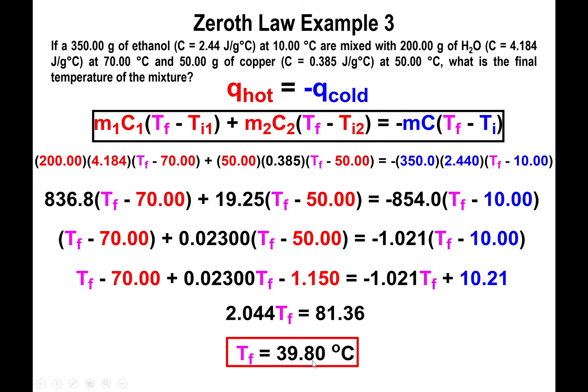And the beauty of this is that 39.8 not only lies in between 10 degrees Celsius and 70 degrees Celsius, but it also lies in between 50 degrees Celsius and 10 degrees Celsius. So that means that we did the correct thing. Assuming that copper was a hot substance was actually correct because we're yielding a value that's still in between 50 and 10.